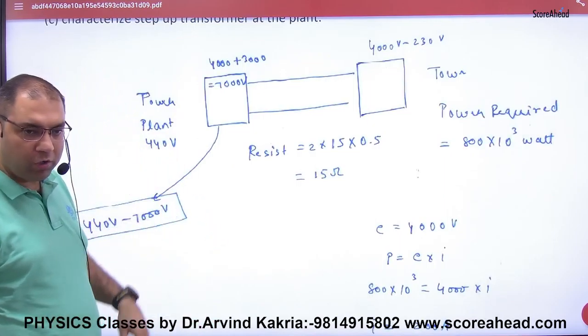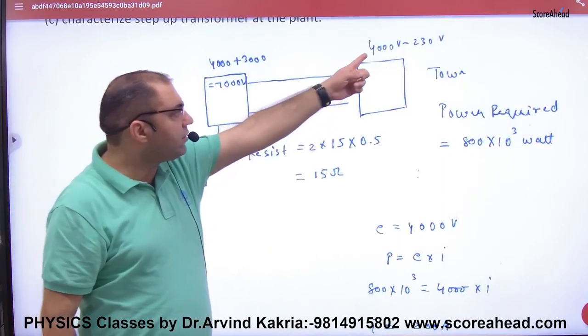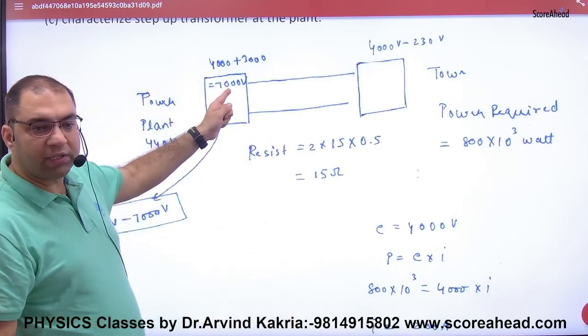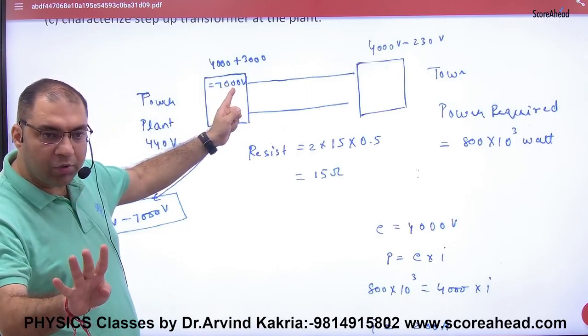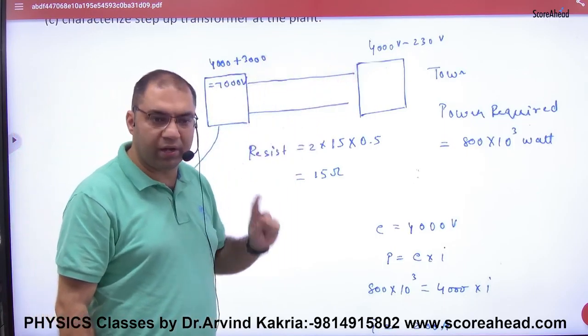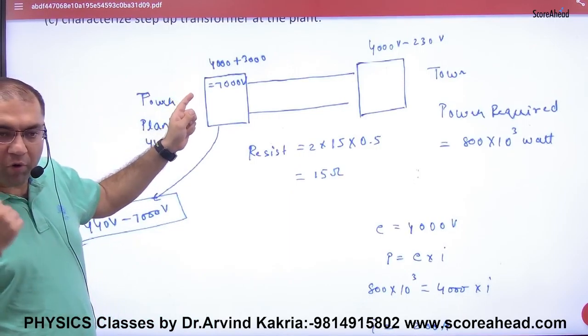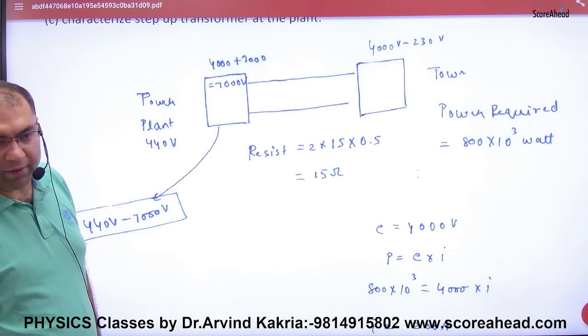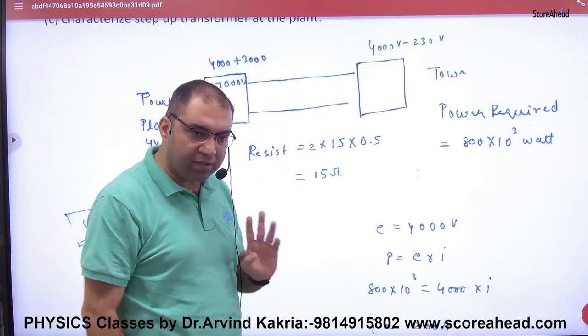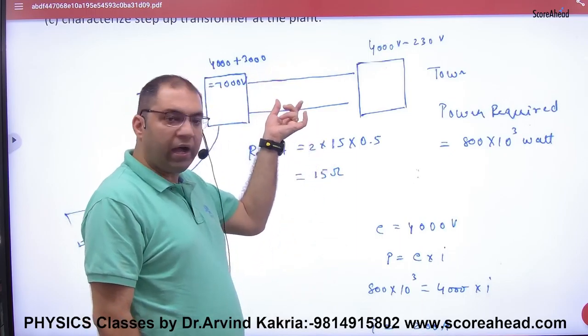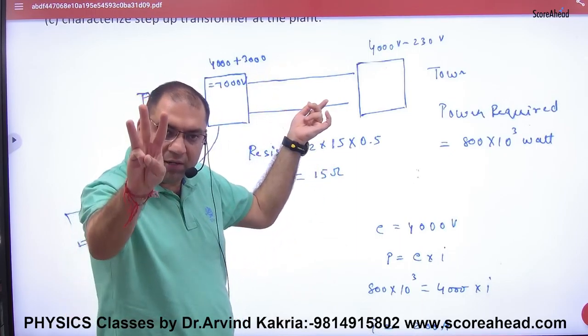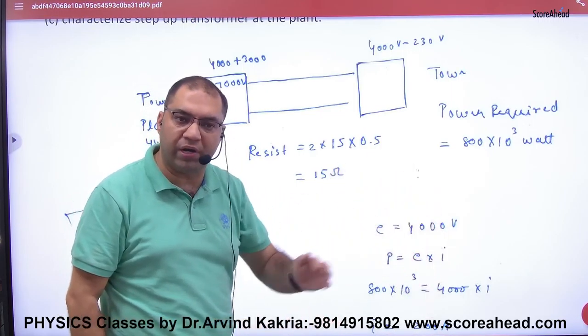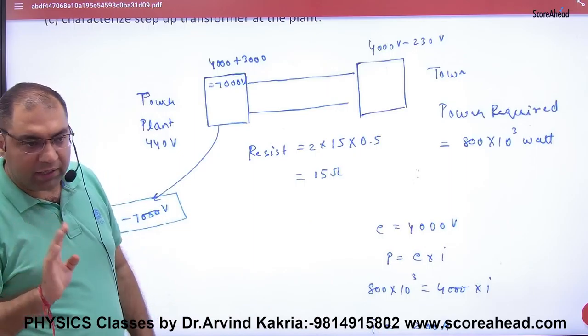If 3000 volts drop here, and transformer output is 4000 volts, so here the transformer is 440 to 7000 volts. You understand the point? How much voltage? 4000. In wire I into R potential drop is 3000, so how much will it come from behind? 7000. In 7000 there is 3000, now 4000 transformer will take. So one answer comes from the transformer.